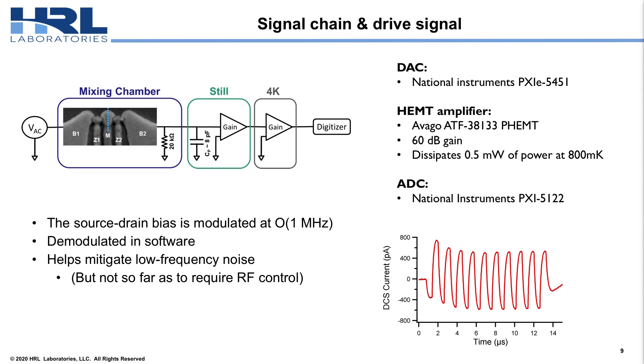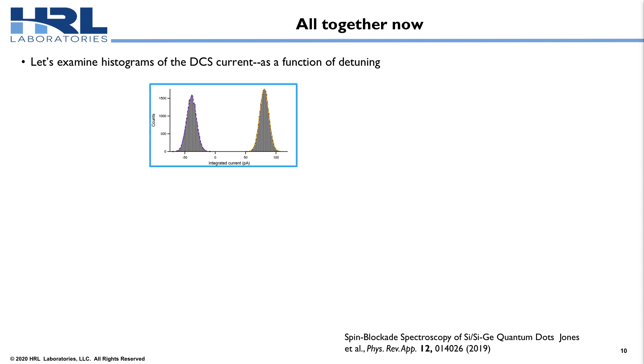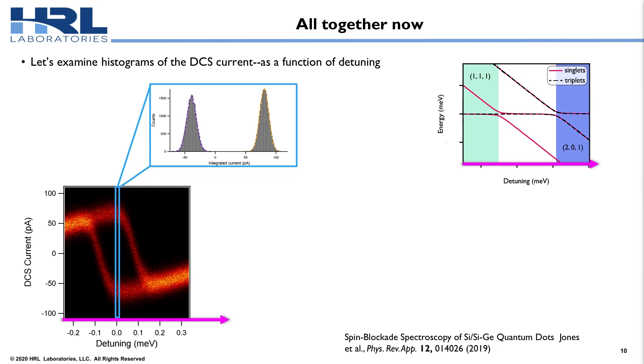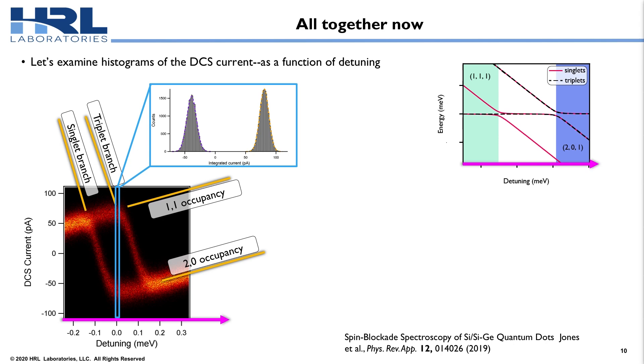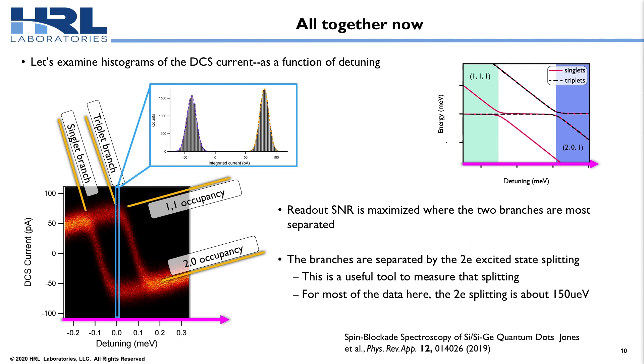When we put that together, and I can try to measure a qubit state, I can get histograms. So here's histograms of the dot charge sensor current. As you can see, they're nicely separated. But the next thing I'm going to do is I'm going to do that as a function of the detuning of the point at which I do this measurement. Now, as I move all the way to low detuning in the negative side, I'm always in the one-one charge occupancy. But as I move to high detuning, I'm always in the two-zero charge occupancy. If I look in the middle, I can see very clearly the physics of where the singlet branch transitions the charge state before the triplet branch transitions. And if I sit right in the middle, that point of maximum separation is where I have the highest SNR. These two branches are separated by the two-electron excited state splitting. And we actually think this is a pretty useful tool to measure that splitting in situ. And for most of the data here, that two-electron splitting is going to be about 150 microeV.